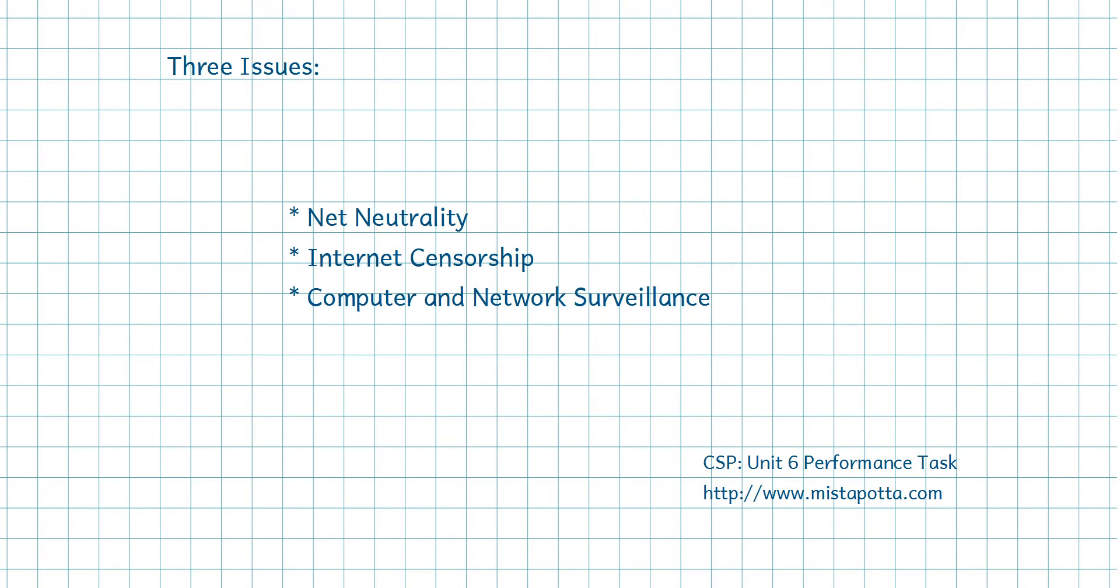You look at net neutrality, internet censorship, computer and network surveillance. All of these are topics that are very timely. They come up quite a bit in the news every so often. And so it would be really good if you kind of boned up on this, and imagine you were trying to explain this to someone who wasn't in our class. How would you explain these topics in such a way that they would understand the importance of your position on this, either for or against whatever your position happens to be, as you do the research on these topics.